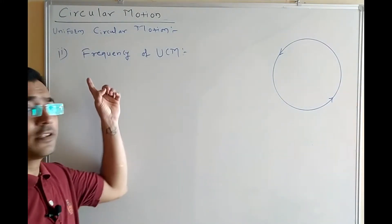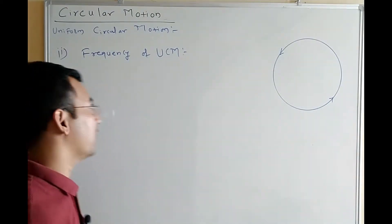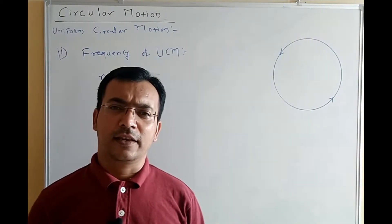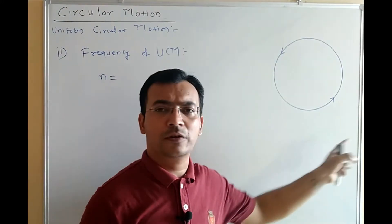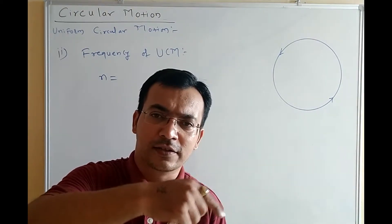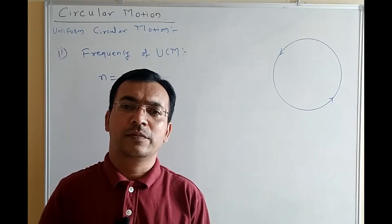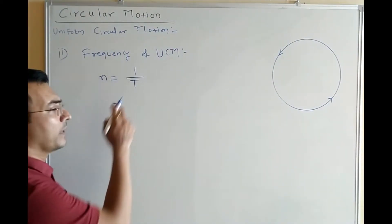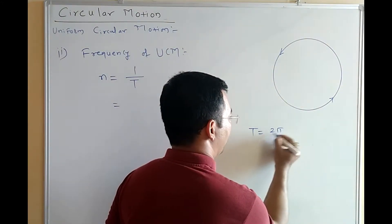From the other definition, the frequency of uniform circular motion is denoted by the small letter n. The time period is given by T = 2π/ω, and frequency n is defined as the number of revolutions completed per unit time.